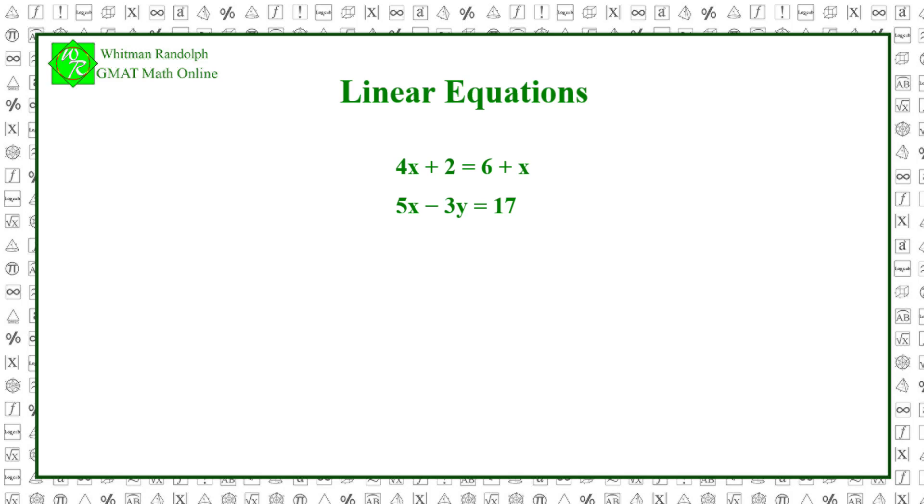They are called linear because the graphs of these equations on the coordinate plane are straight lines. If there is only a single equation and it has only one variable or unknown, it can be solved. That is, the value of the unknown can be determined provided the equation is consistent and is not an identity.